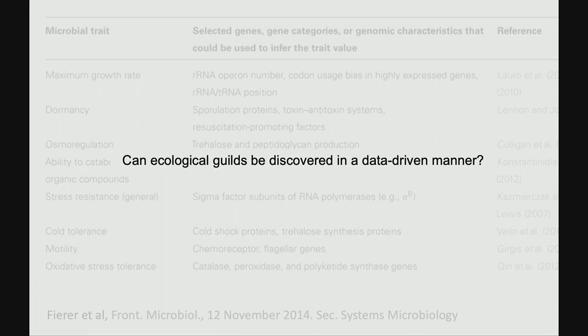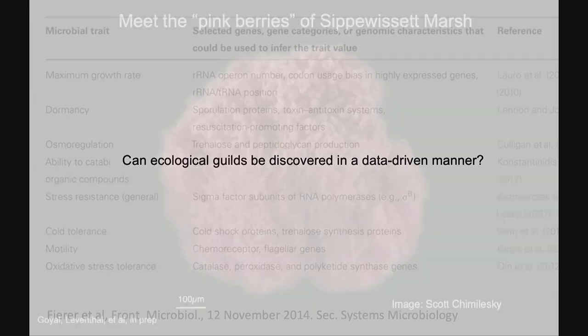Guilds are simply roles — organisms that share a set of traits. A very compelling example would be: you have primary producers, herbivores, carnivores. These are roles in an ecosystem. The properties of the community may emerge from interactions between these guilds, these functional groups. So I want to warn you — this problem is not solved in general. I just think it's solvable, and we're making a little bit of progress in this direction, and I'll also tell you the limitations.